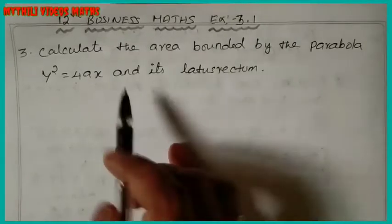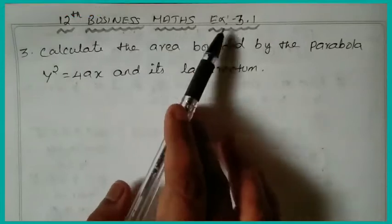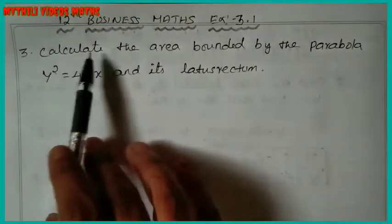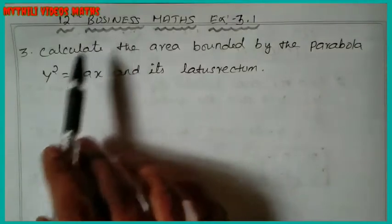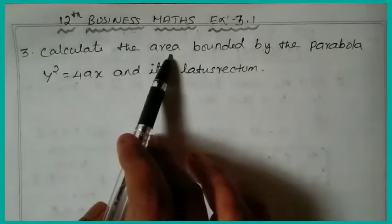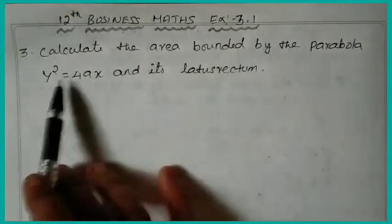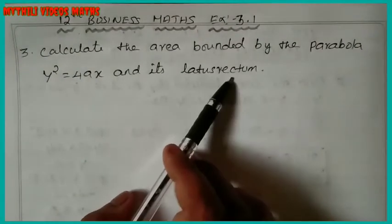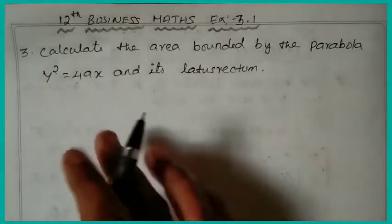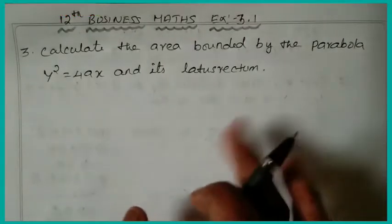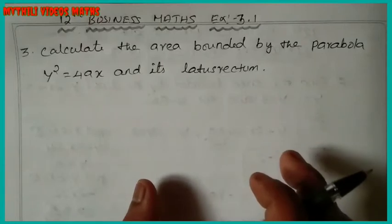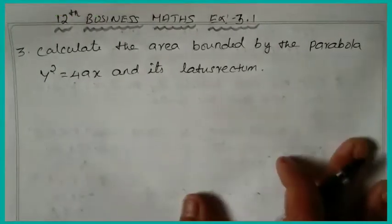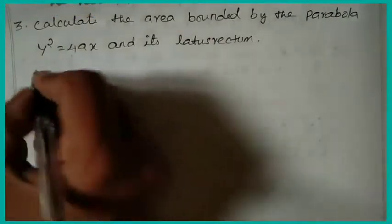Hi students, I am Miss Lee. This is twelfth business maths exercise 3.1. Already two sums are completed — that is integral calculus 2. In this third sum, we calculate the area bounded by the parabola y² = 4ax and its latus rectum. When y² = 4ax, we have to draw it to the right, and find the area.